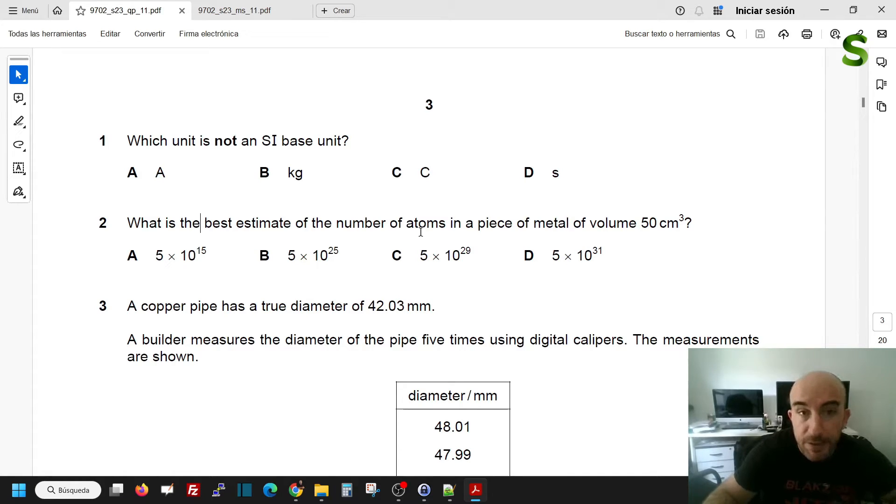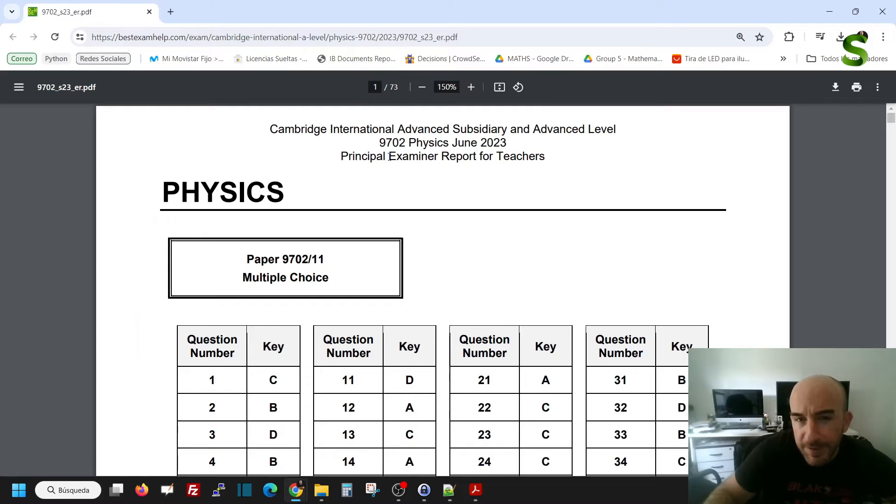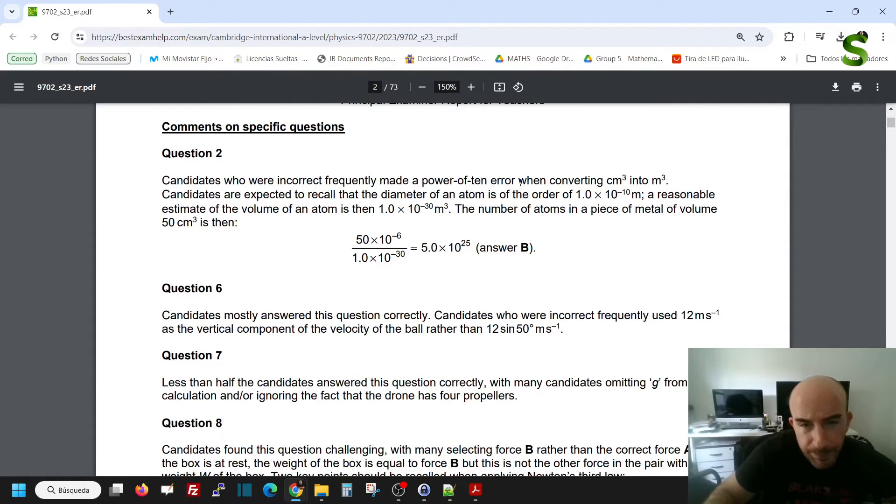And what they're expecting you to know is something that comes in the book, and it's approximately the diameter of an atom. You should know that an atom is more or less 1.0 times 10 to the power of minus 10 meters. So if you look at the examiner reports for teachers, candidates are expected to recall that the diameter of an atom is in the order of 1.0 times 10 to the power of minus 10 meters.